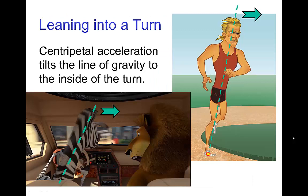Another type of acceleration that causes a tilt in the line of gravity is when the character is in a situation where they're doing a turn. In this case, there is a centripetal acceleration towards the inside of the turn, and to stay in balance, the character naturally leans into the turn.